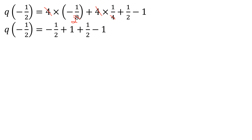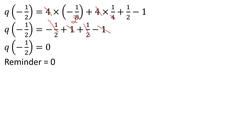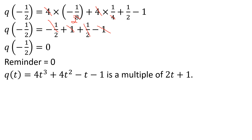Then minus 1 by 2 plus 1 plus 1 by 2 minus 1, so minus 1 by 2 plus 1 by 2 cancel. Then Q of minus 1 by 2 is equal to 0, so the remainder is 0. Since the remainder is 0, it is a factor — so 4t³ plus 4t² minus t minus 1 is a multiple of 2t plus 1.